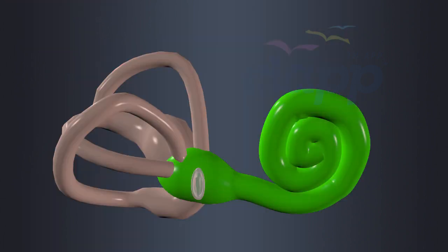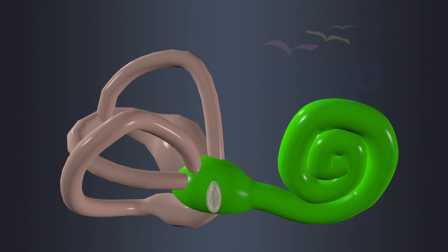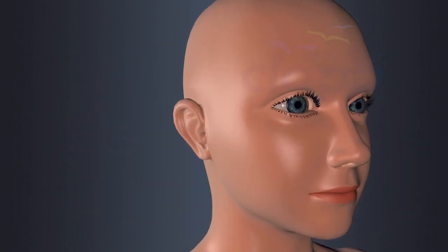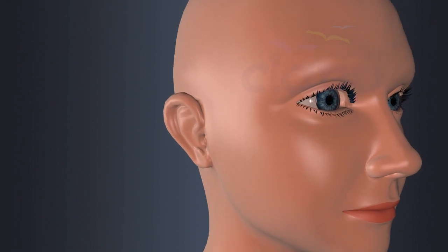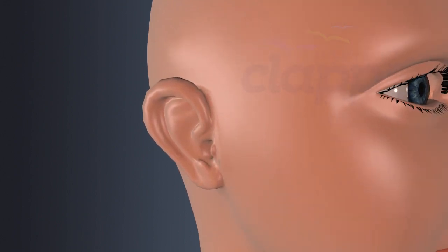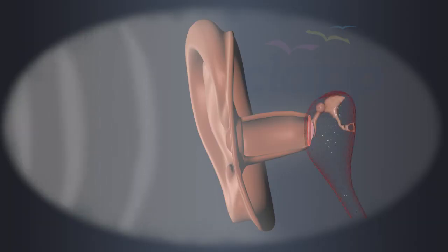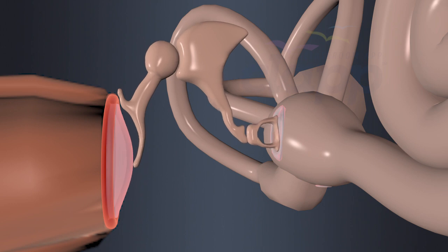Transduction of sound: Cochlea's primary function is to convert sound waves into electrical signals that the brain can interpret. Sound waves enter the ear and travel through the external auditory canal to the eardrum or tympanum. The tympanum starts to vibrate according to the sound vibrations.